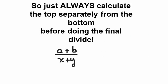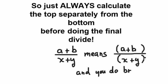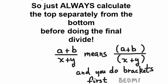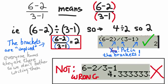Always calculate the top separately from the bottom before you do the final divide. If you've got some expression in the numerator divided by an expression in the denominator, it really means the top is calculated separately from the bottom — you have to put in the brackets for the calculator. We often leave out the brackets when we write fractions, but when we write it that way, we mean the brackets are there. You have to put them in for the calculator.